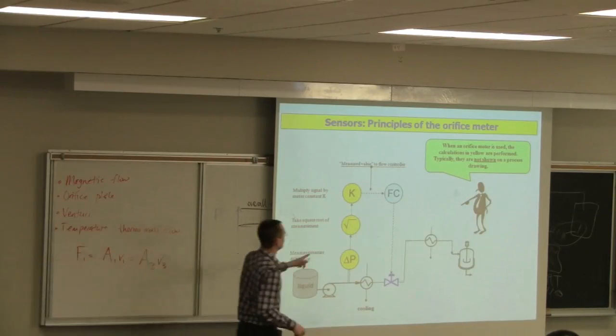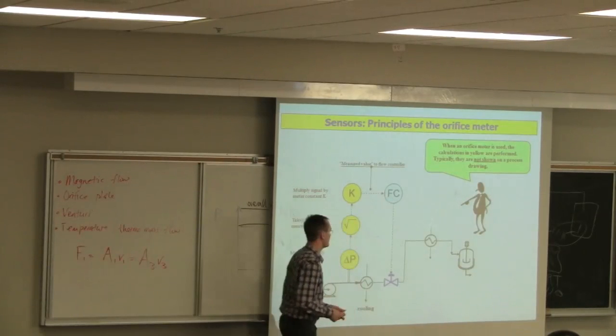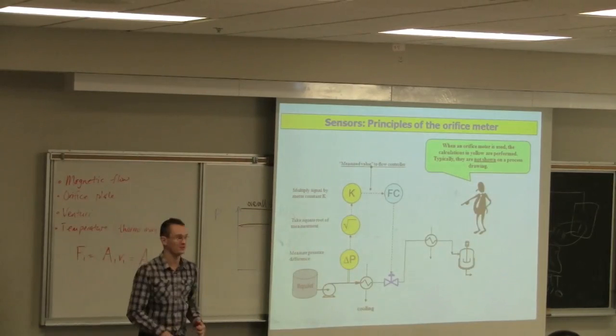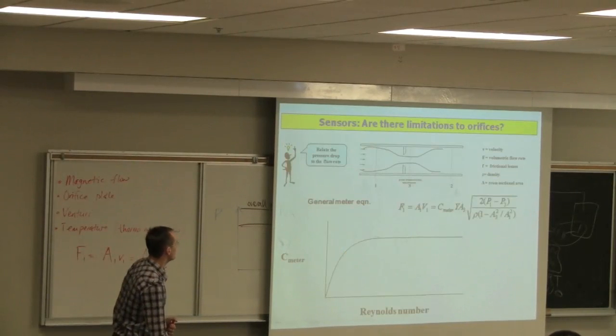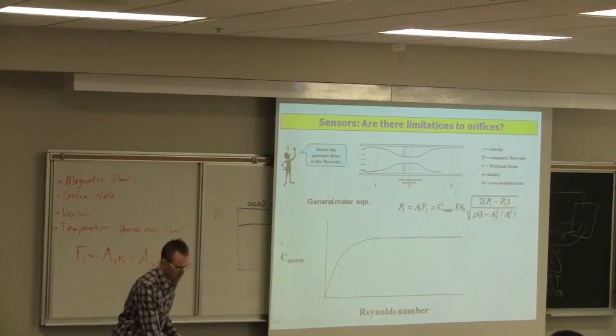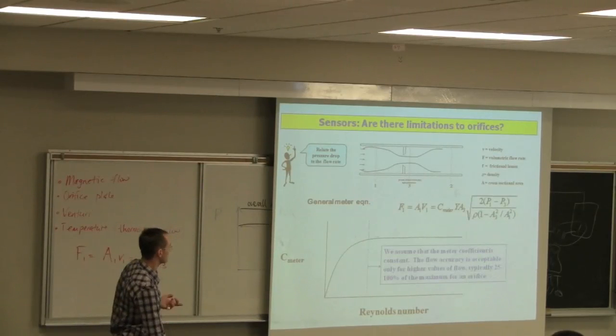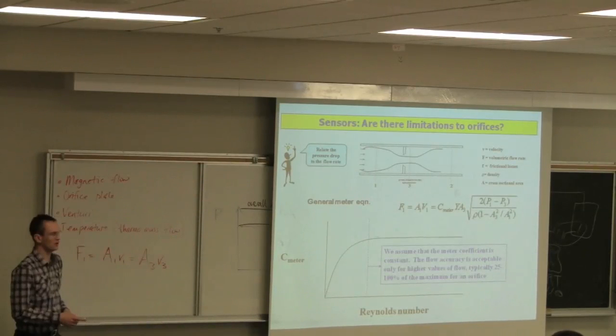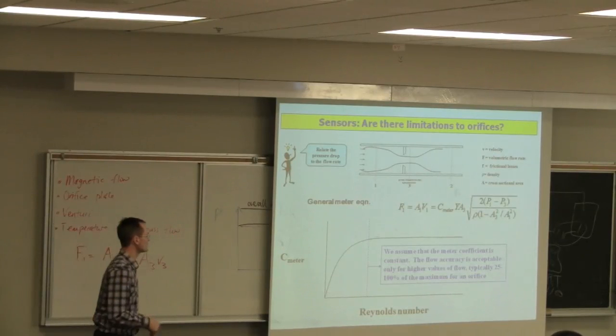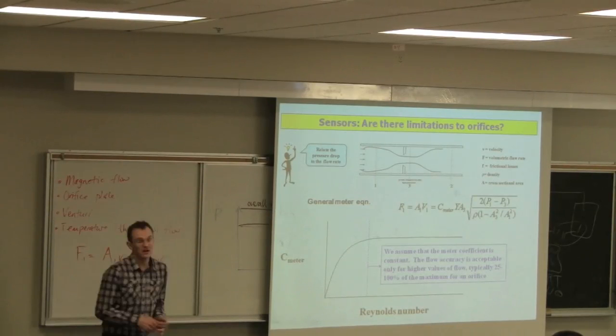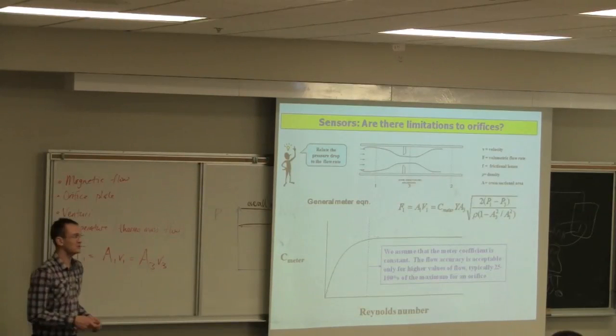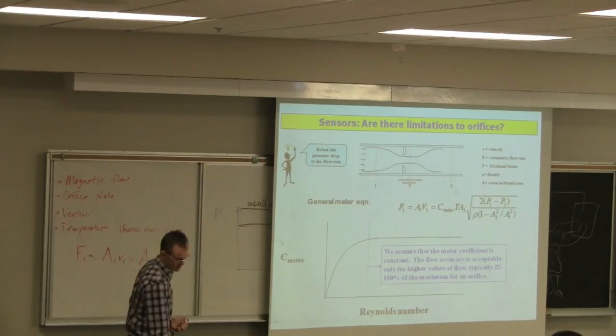One other thing to be aware of is that k is a function of the Reynolds number. We typically assume that's constant as well - we're operating at a high enough velocity that our Reynolds number is not going to affect that constant k. That impacts the accuracy of the flow meter at really low flows. We would expect a higher error at low flow.